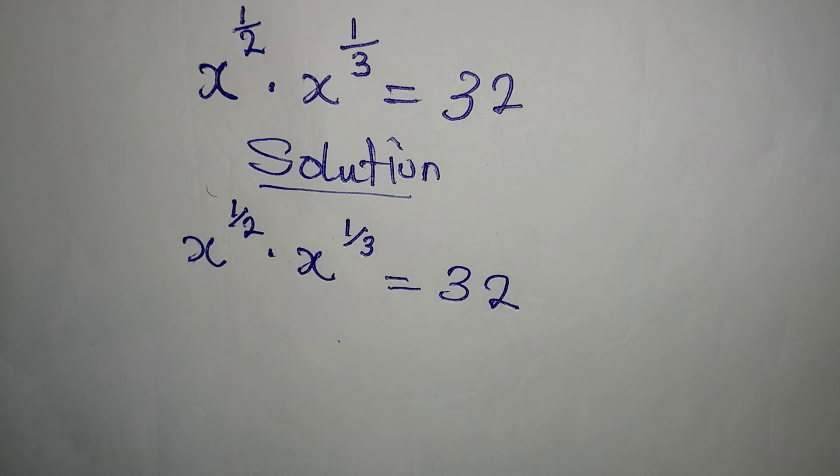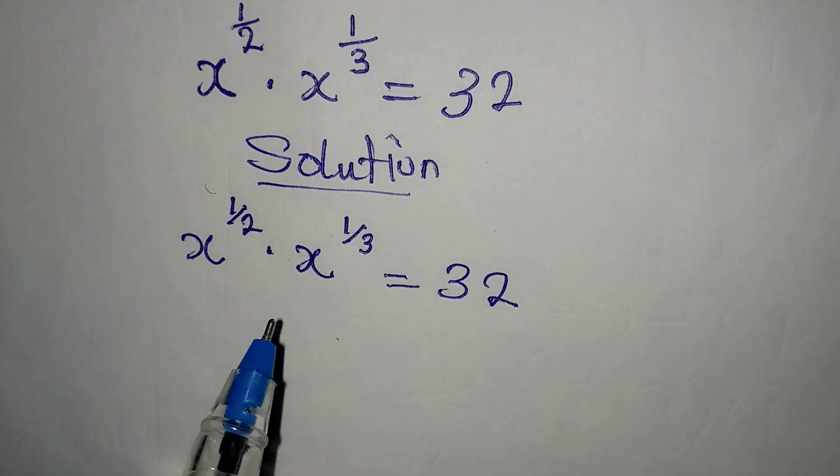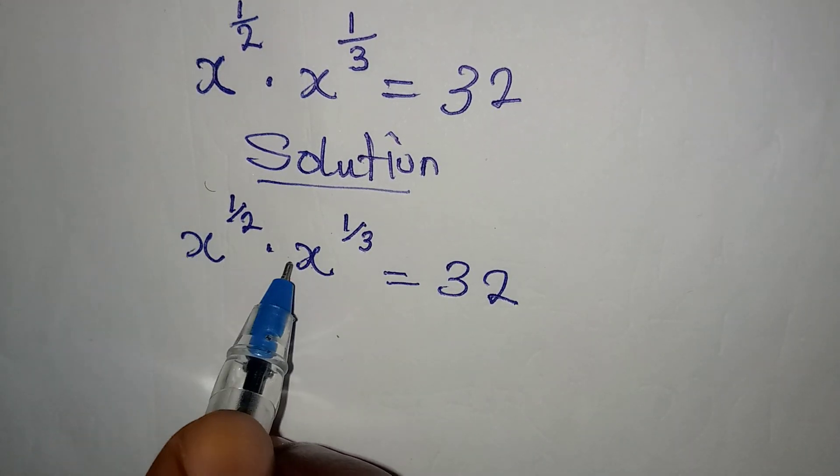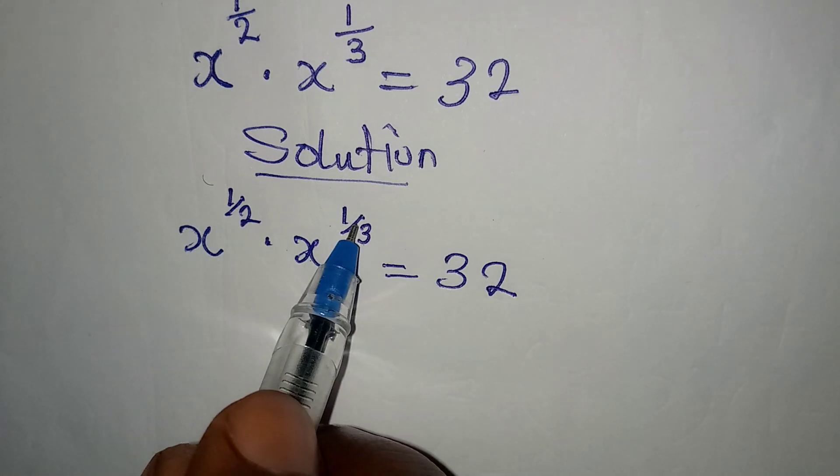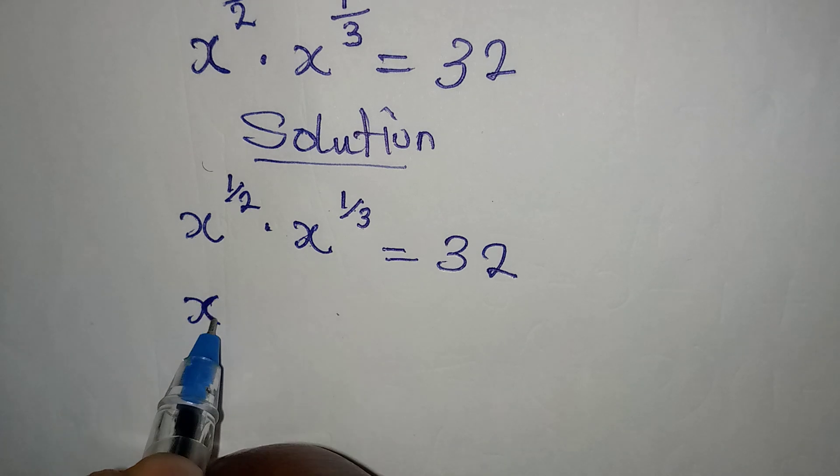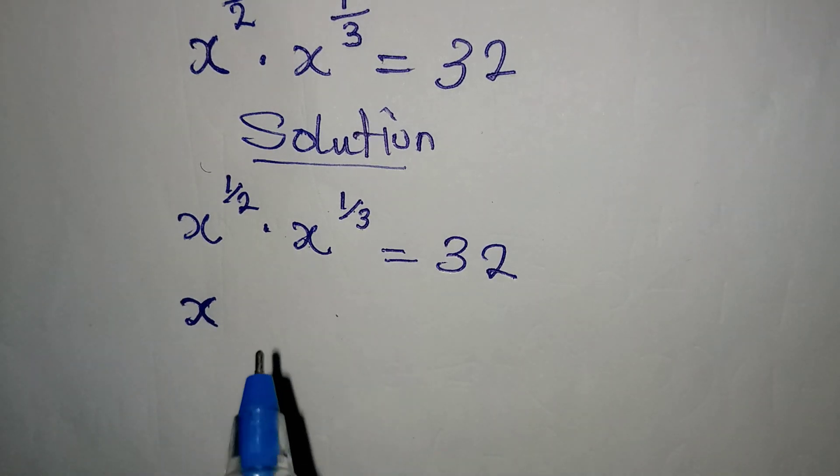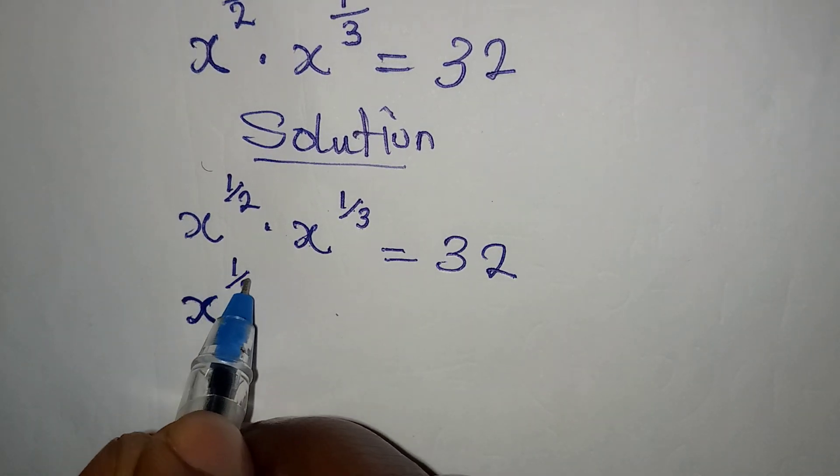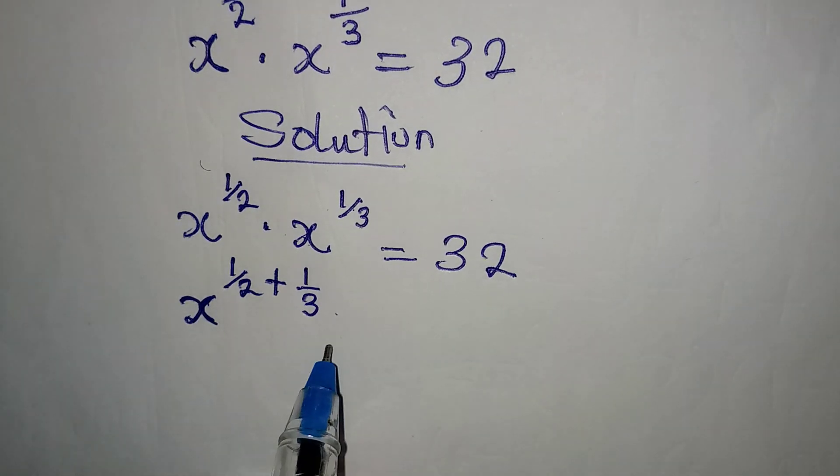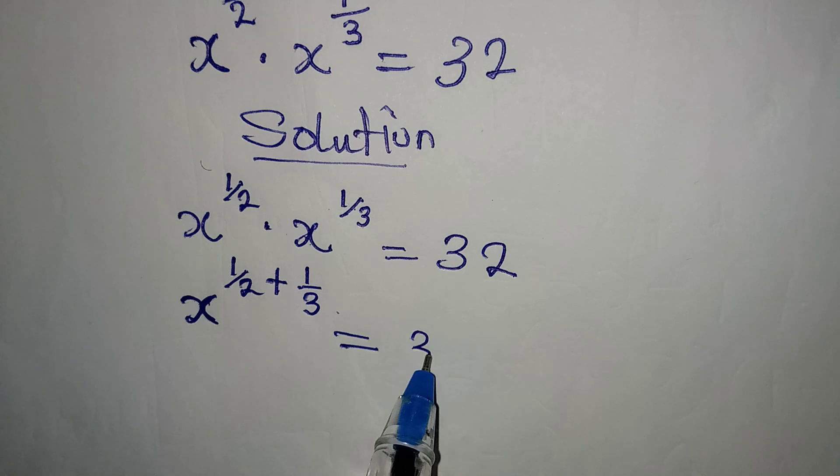Now this is simple because we are going to follow one of the rules of indices. If you have the same base and you have to multiply them, you will add the powers as you pick one of the bases. So I am going to pick x and add 1 over 2 and 1 over 3 so that this will be equal to 32.